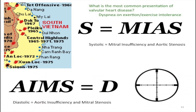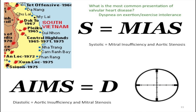When it comes to murmurs: the most common systolic murmurs are MIAs — mitral insufficiency and aortic stenosis. Know that insufficiency might be called regurgitant, so it's mitral insufficiency or mitral regurg. For diastolic murmurs, the mnemonic is "if I aim a gun at you, you're going to die" — aortic insufficiency and mitral stenosis. Those are the most common diastolic murmurs.